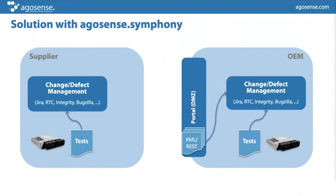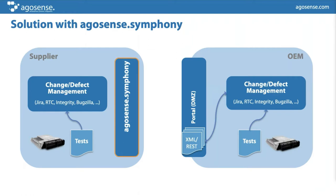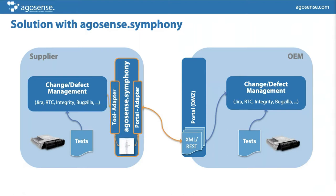If we implement Argosense Symphony on the supplier side, they can retrieve data using the specialized portal adapter — for example for Daimler or BMW — either directly via the REST API or by reading and interpreting the XML formats provided by the OEM. As a supplier, you don't have to care about how this is implemented — Symphony just takes the data and puts it into your internal system. Of course, the way back is exactly the same: once defects are worked on, Symphony reports the changes and resolutions back to the OEM.